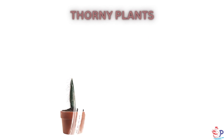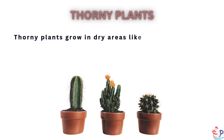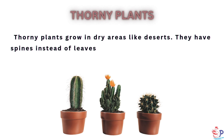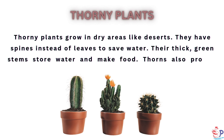Thorny plants grow in dry areas like deserts. They have spines instead of leaves to save water. Their thick, green stems store water and make food. Thorns also protect them from animals.